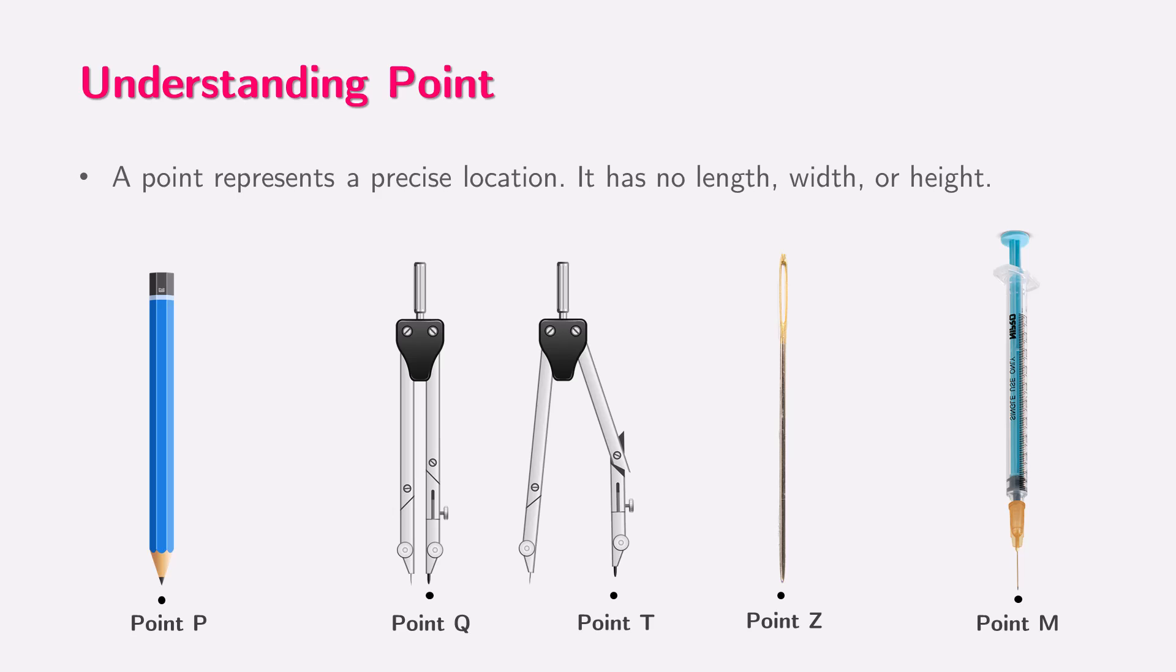A point is like a tiny dot. It represents a specific location, but does not have any size. In other words, a point determines a precise location, but it has no length, breadth, or height. Imagine the tip of a sharp pencil, the tip of a compass, or the end of a needle. These are examples of points. Points are usually labeled with capital letters like Z, P, or T.